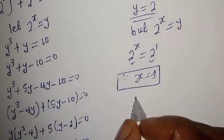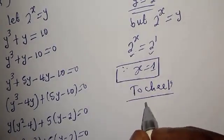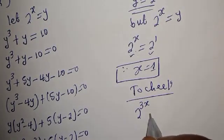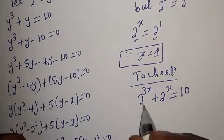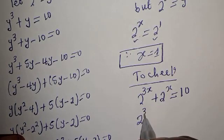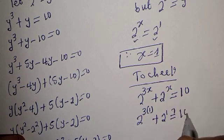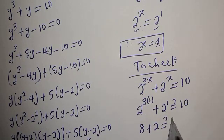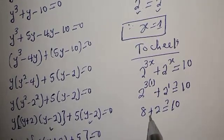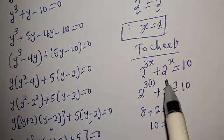We can check to confirm if our answer is right or wrong. We have the given equation: 2 raised to power 3x plus 2 raised to power x is equal to 10. When x is 1, we get 2 raised to power 3 times 1 plus 2 raised to power 1, which is 8 plus 2, must be equal to 10. Therefore the left hand side is 8 plus 2, which is 10, equal to the right hand side 10. Which is true for the given equation.